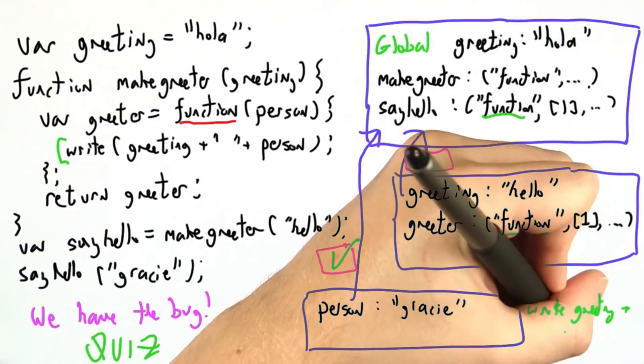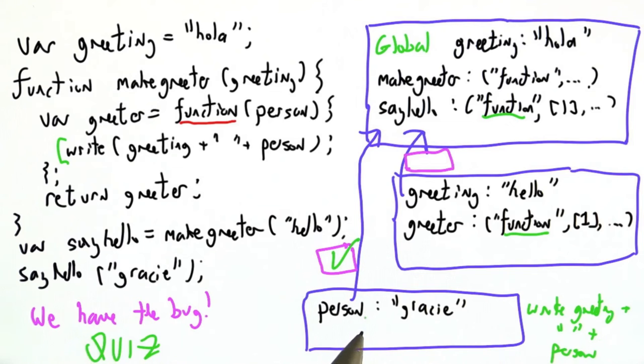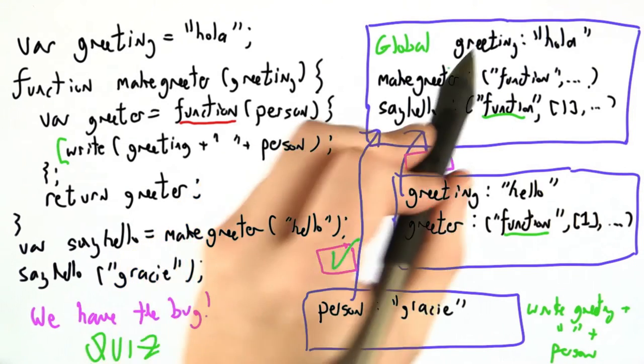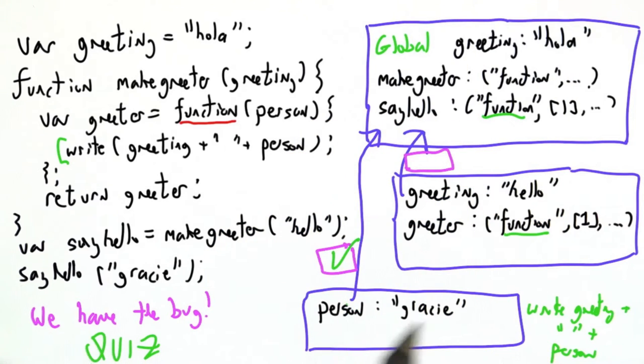Greeting plus space plus person. We go to lookup greeting, do we have it? No. Let's go ask our parents. Oh, our parents do have a greeting, it's hola. Lookup person, do we have it? Yes, it's Gracie.